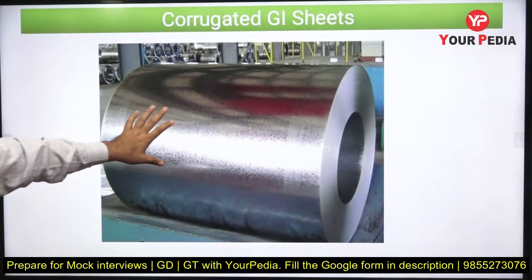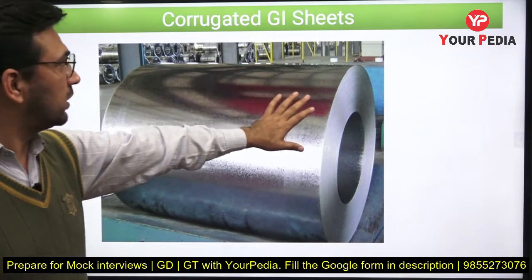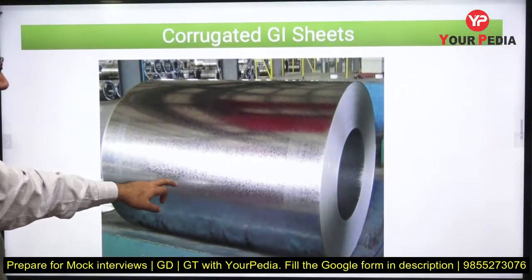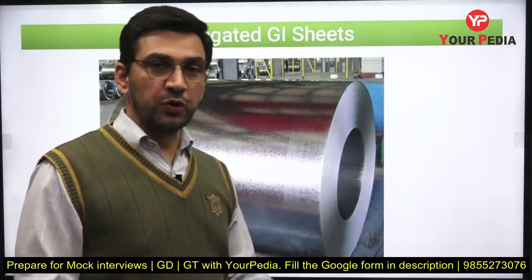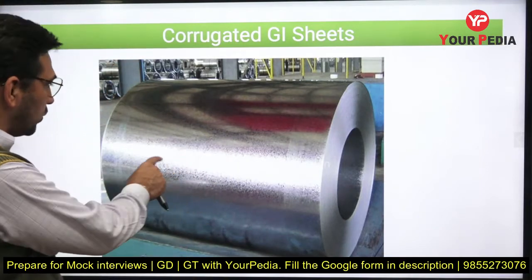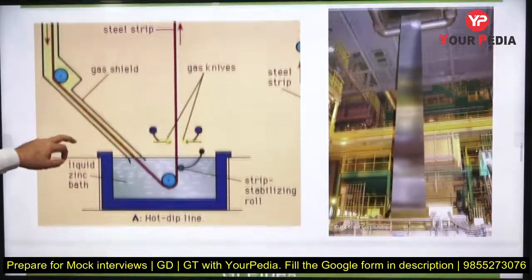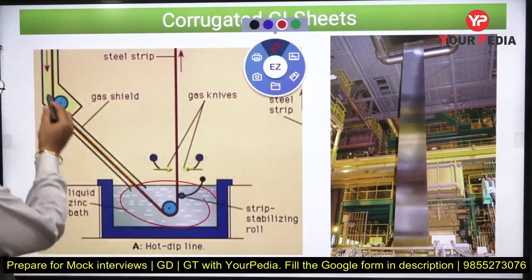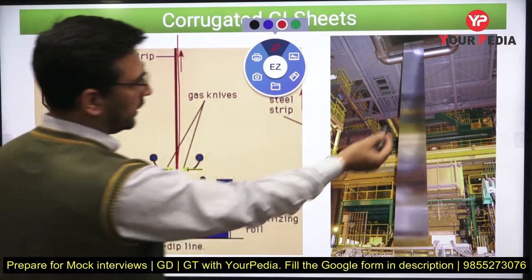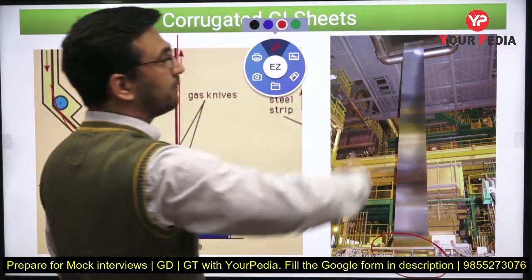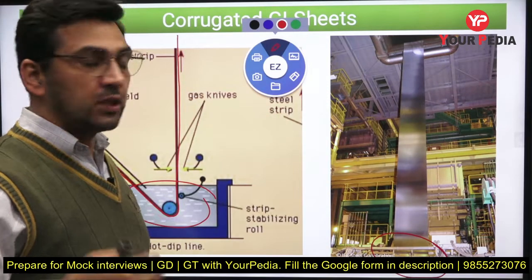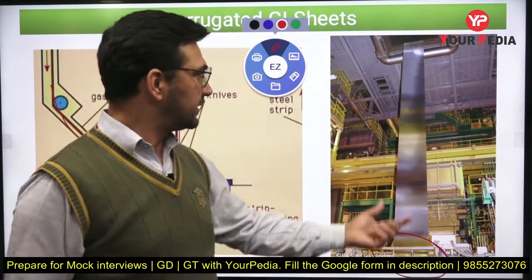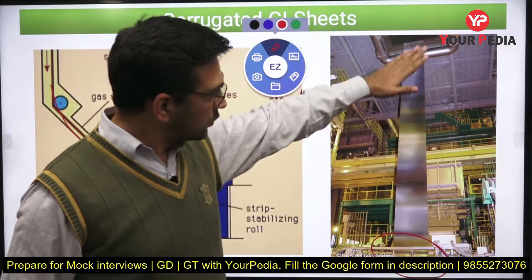Let me briefly explain the process. You start with a coil of galvanized GI — it is a plane sheet initially. After cold rolling of steel, you produce a coil, and then that coil is coated with zinc. The coil is allowed to pass through a zinc bath — a molten zinc bath. You allow that bare steel sheet to pass through the zinc bath and a coating is produced.